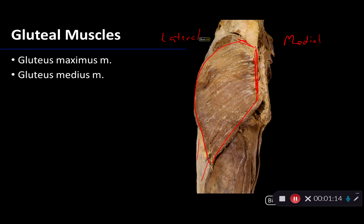The gluteus maximus muscle is the number one most powerful extensor of the hip. It's going to provide quite a bit of force for situations such as climbing stairs or raising oneself from a seated position. It's innervated by the inferior gluteal nerve and supplied with blood by the superior gluteal artery.